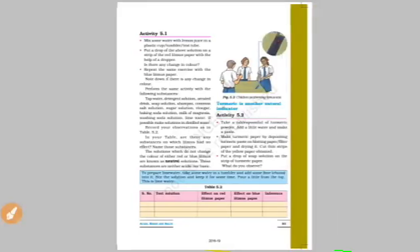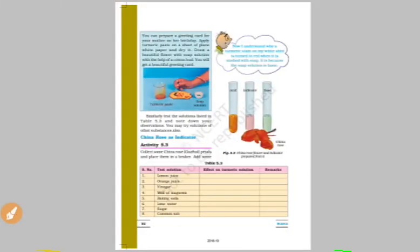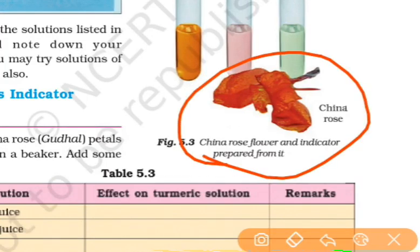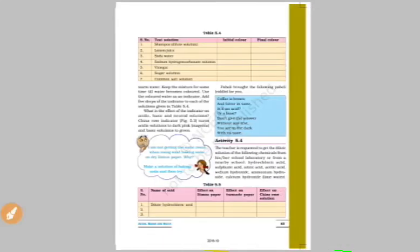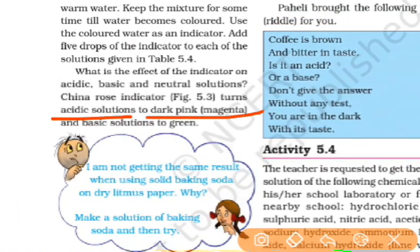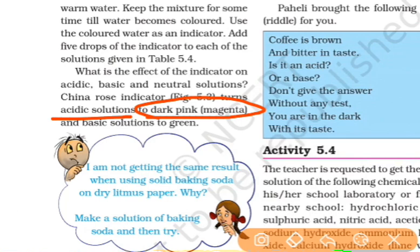First we will look at lichens — lichens is a natural indicator. We will also look at the China rose as a natural indicator. In an acid solution, China rose gives a dark pink color, while in a basic solution it gives a green color.